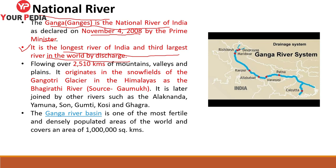The Ganga is later joined by other rivers such as Alaknanda, Yamuna, Son, Gomti, Kosi and Ghagra. When the Ganga enters Bangladesh, it is known as the Padma River. The Ganga river basin is one of the most fertile and densely populated areas of the world, covering an area of 10 lakh square kilometers.